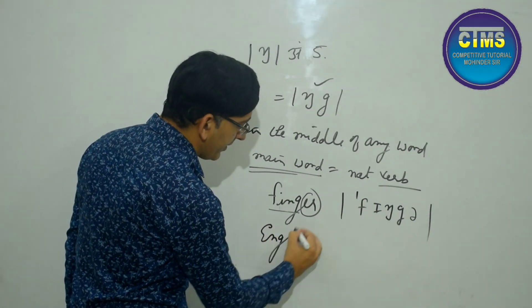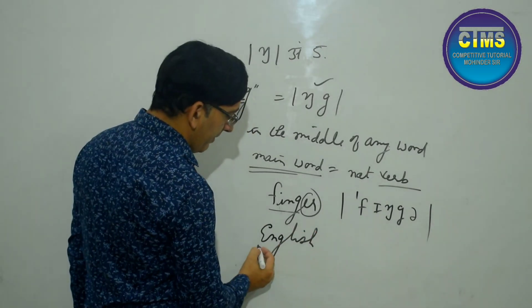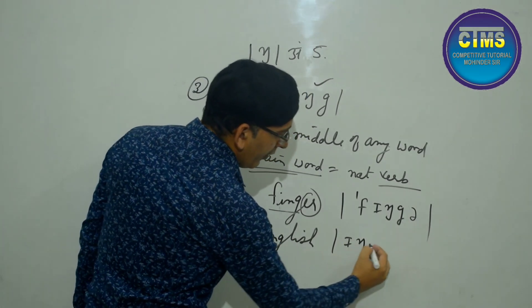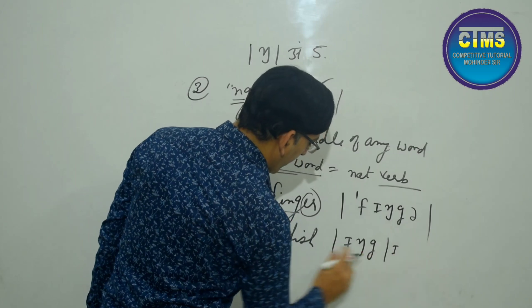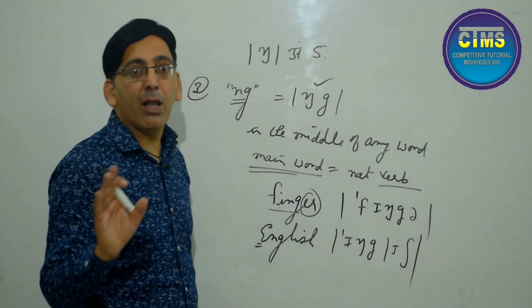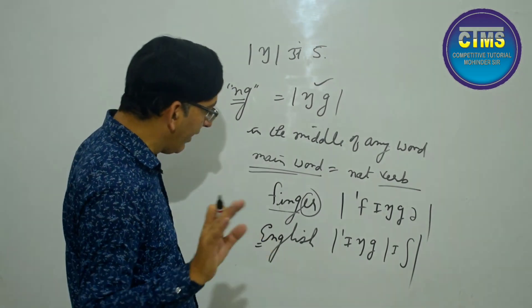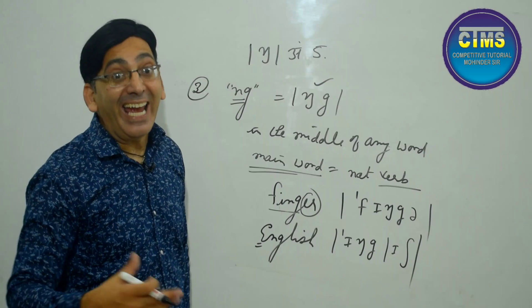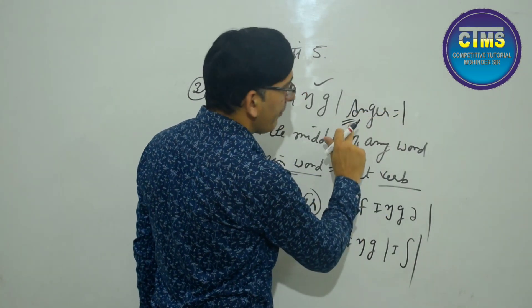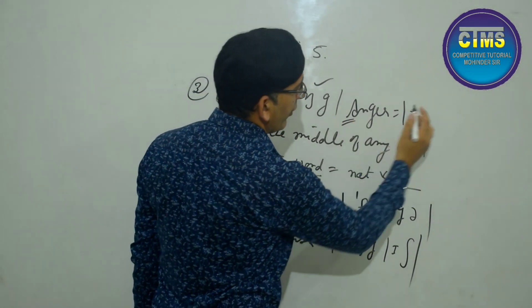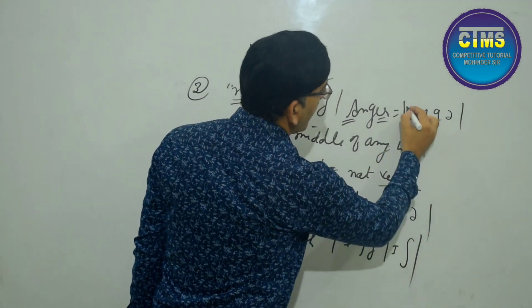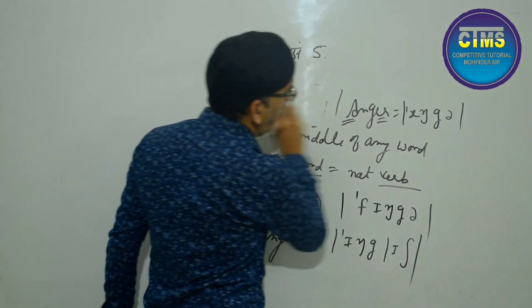Another example: E-N-G-L-I-S-H — 'English'. The main word is not derived from a verb, so N-G gives ŋg. The small 'i' gives /ɪ/, and then 'sh' sound — so it becomes 'English'. Similarly: A-N-G-L-E — 'angle', and A-N-G-E-R — the 'a' gives /æ/, N-G gives ŋg, and E-R becomes schwa — so it's 'anger'. This completes our third rule. Now come to the fourth rule.